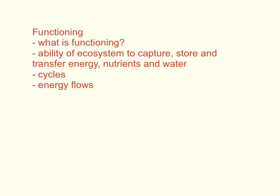That brings us to the last point: functioning. Functioning is the ability of an ecosystem to capture, store, and transfer energy. It links back to that definition of ecosystems — the capturing of solar radiation through the hierarchy of life forms. There are two types of functioning: cycles and energy flows. With cycles, we tend to talk about things like the carbon cycle and the nutrient cycle. There are plenty of different cycles; you certainly don't need to know them all, but I would recommend you can draw diagrams of a handful and have a very good understanding of them. Energy flows refer to food webs and food chains — being able to understand how energy moves through an ecosystem.